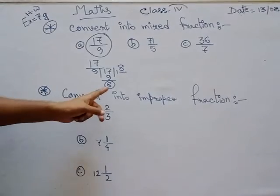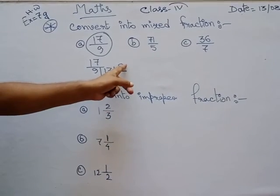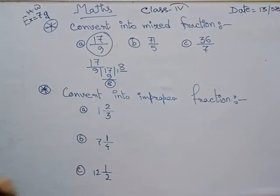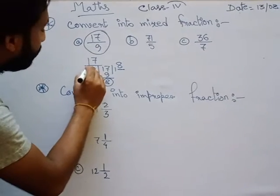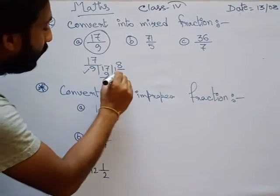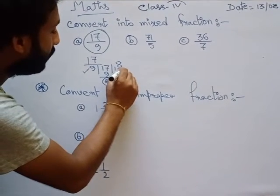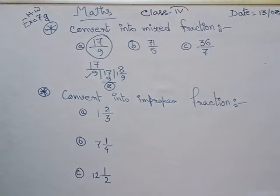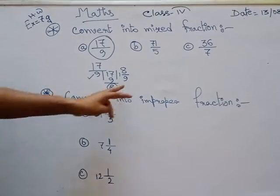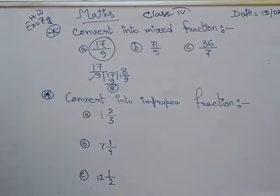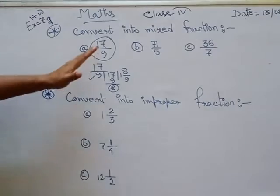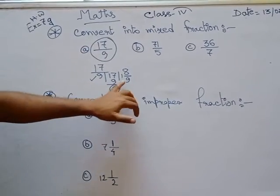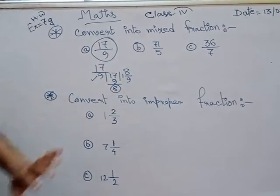That means the remainder will go as the numerator and 9 will go as the denominator. Do you understand? It is the conversion of an improper fraction into a mixed fraction. This one is called the improper fraction.